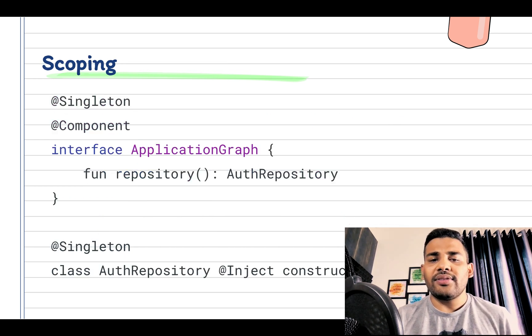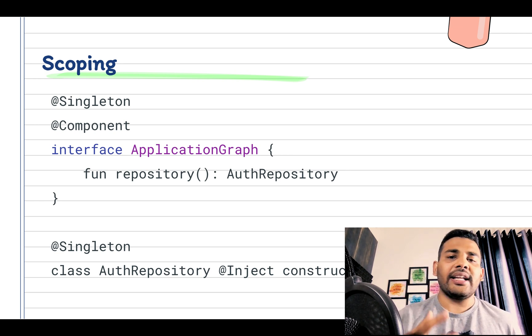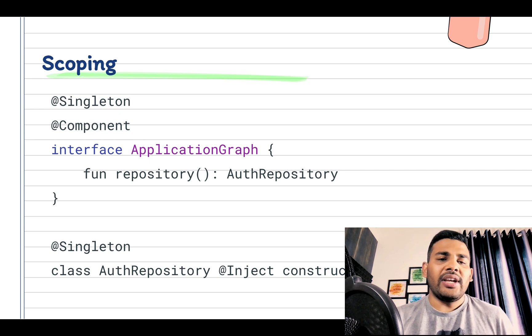We can achieve this thing by scoping. That means we need to tell Dagger that I need a singleton instance of this thing, and we can do it with the help of @Singleton annotation.